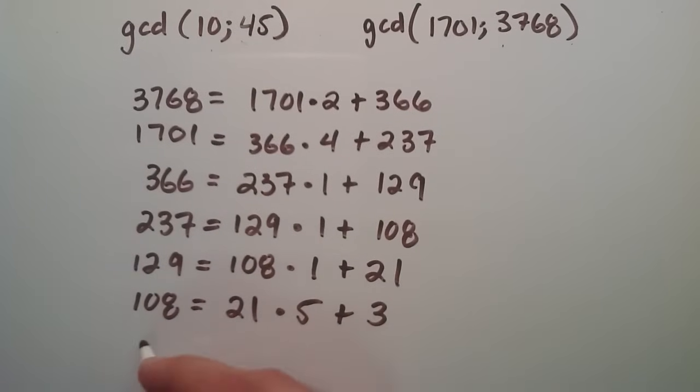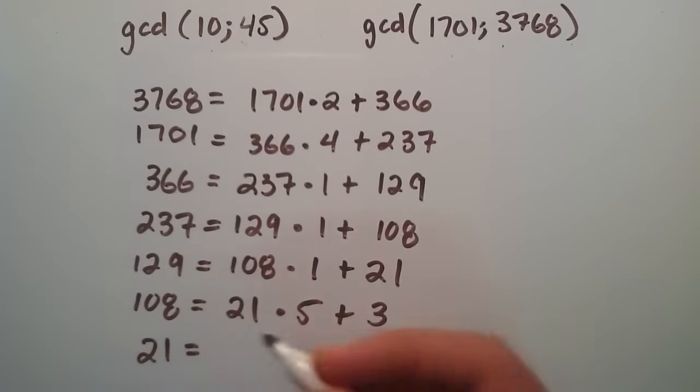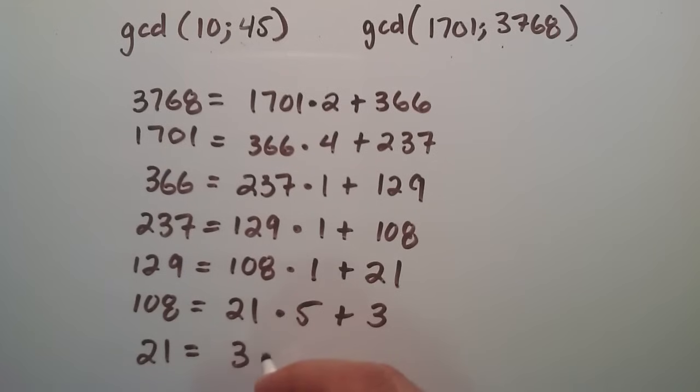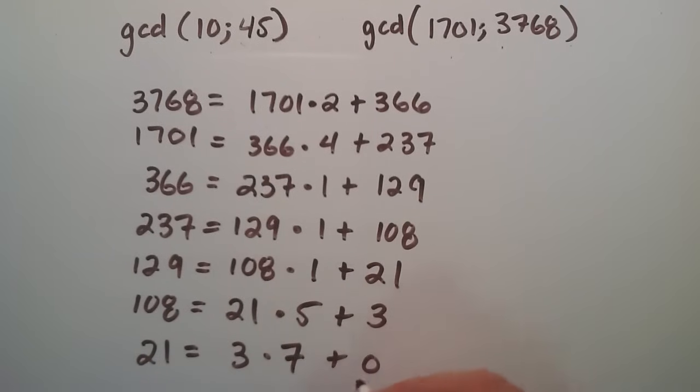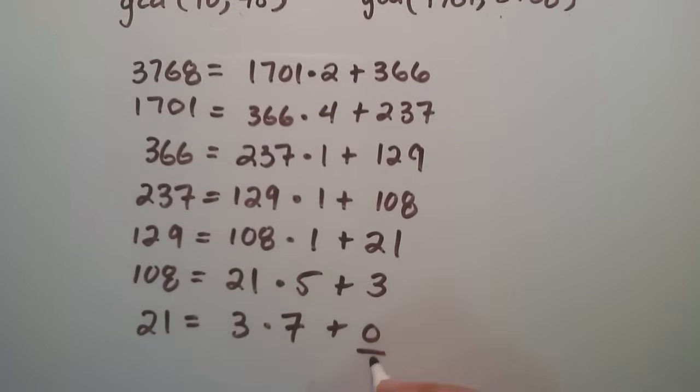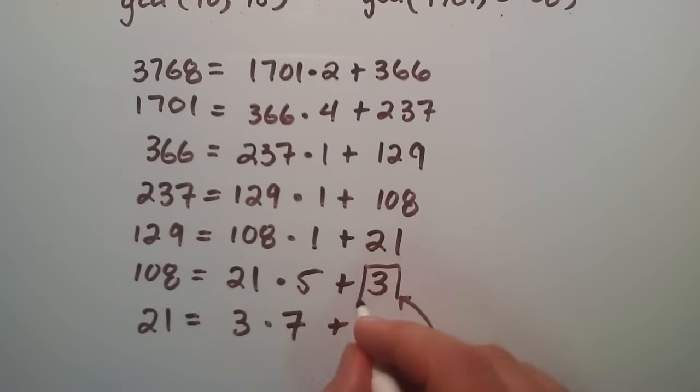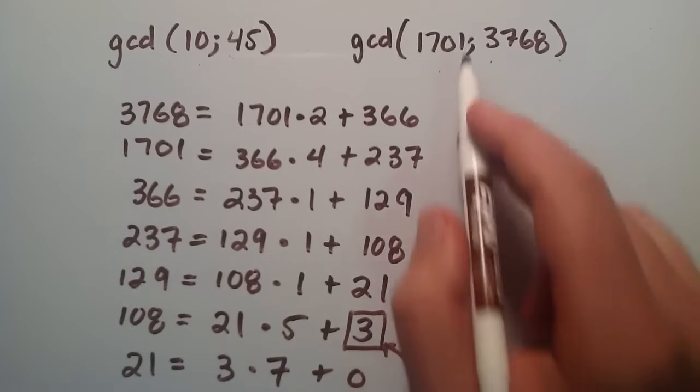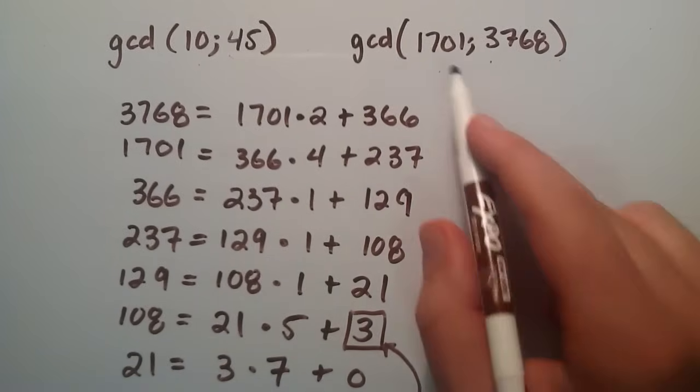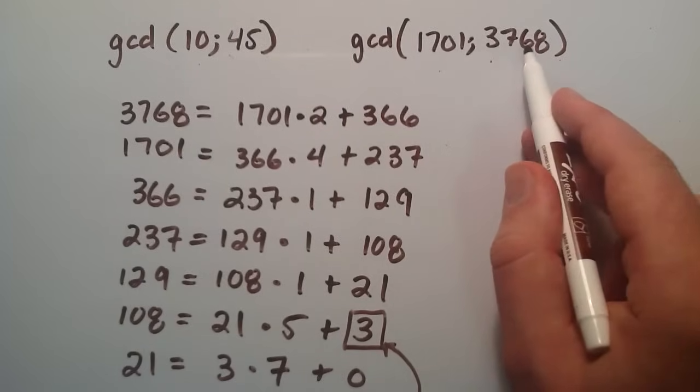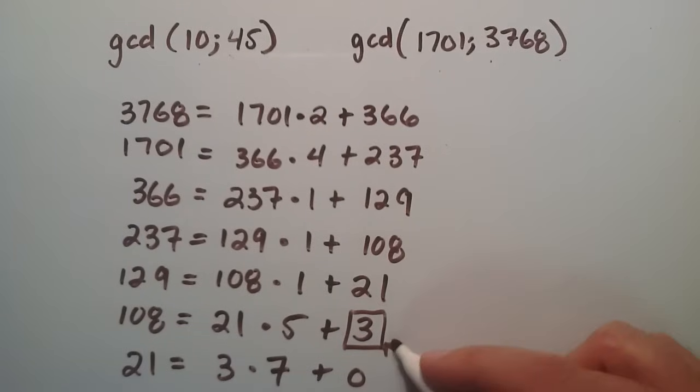And then one last step here, moving the 21 to the left hand side. 21, moving the 3 to where the 21 was. 3 divides 21, goes into 21 seven times, with a remainder of 0. So now we just simply look back to our previous remainder. And this is the greatest common denominator of our original two numbers. So the greatest common denominator of 1,701 and 3,768 is the number 3.